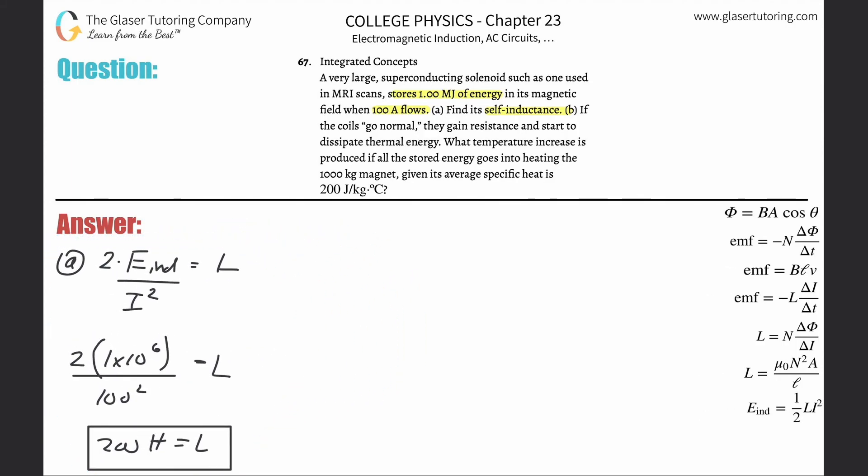All right, letter B now. If the coils go normal, right, they gain resistance and start to dissipate thermal energy. What temperature increase is produced if all the stored energy goes into heating the 1000 kilogram magnet, given its average specific heat is 200 joules per kilogram?